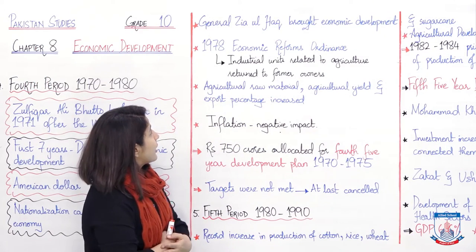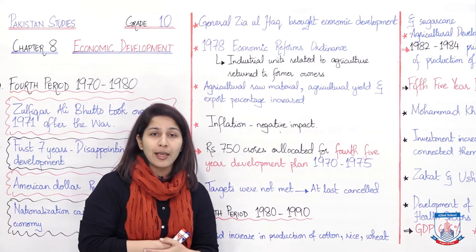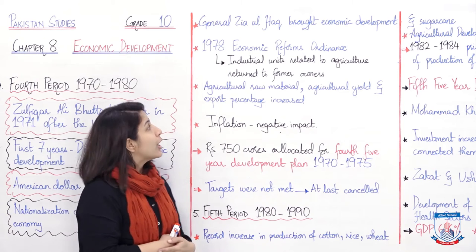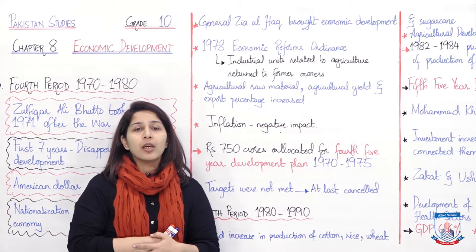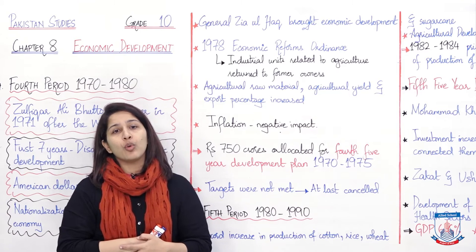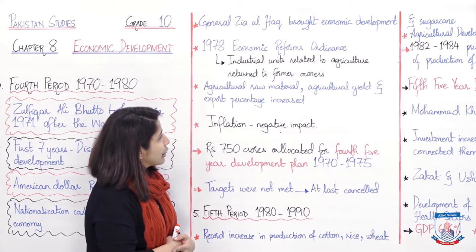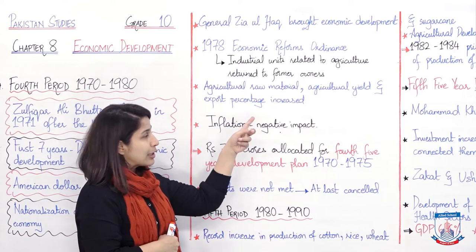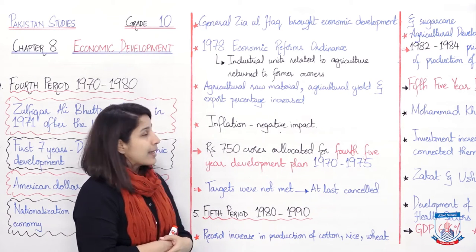There was improvement in General Zia-ul-Haq's era. He brought economic development — the steps he took were very successful. In 1978, the Economic Reforms Ordinance was passed, according to which industrial units related to agriculture were returned to their former owners. This caused agricultural raw material, agricultural yield, and export percentage to increase, as private owners reinvested once the industries were returned to them.